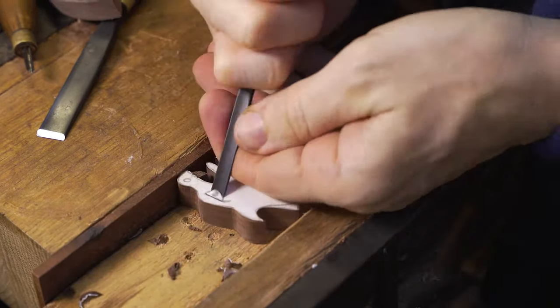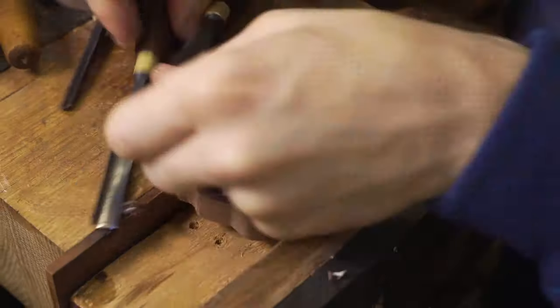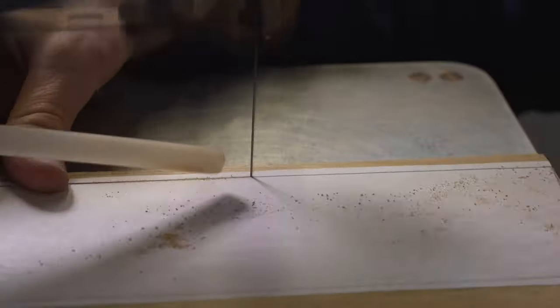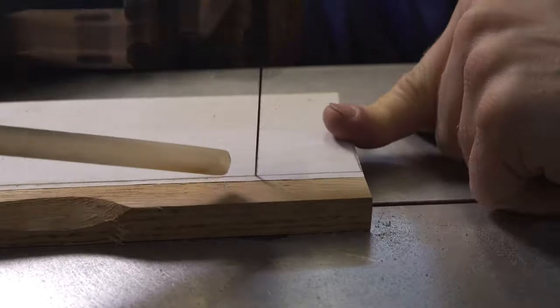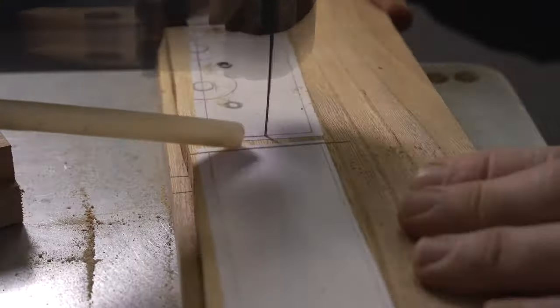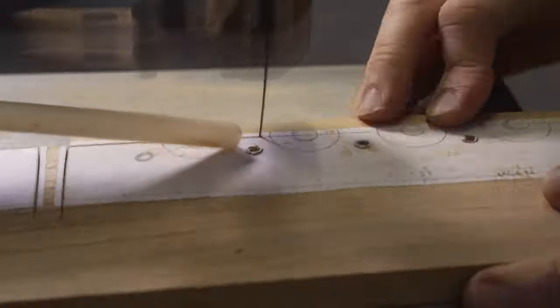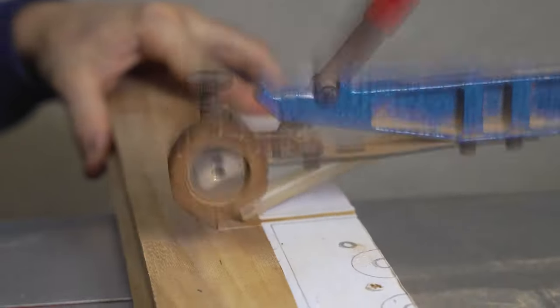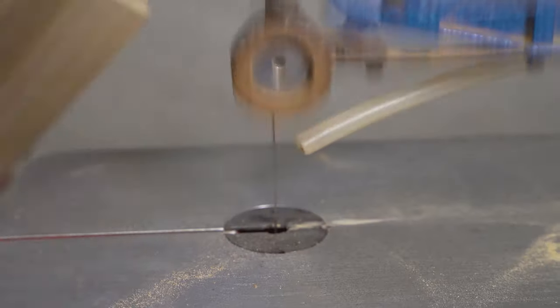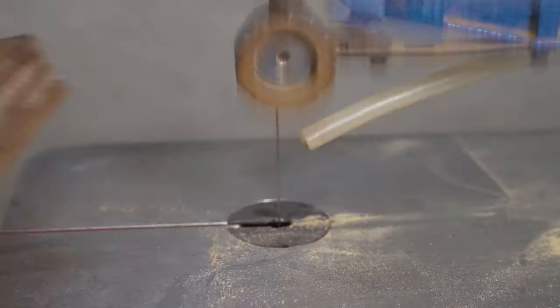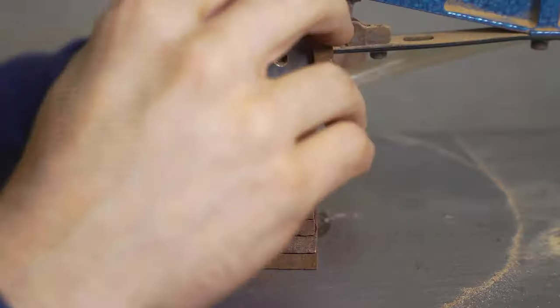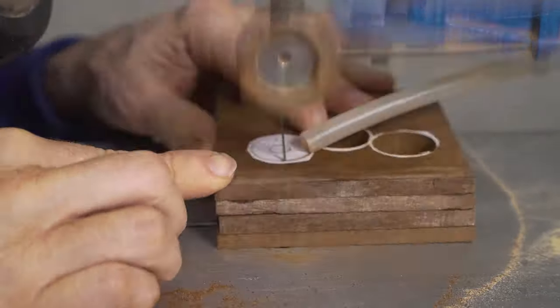So once we have finished carving our figureheads for our Viking longboat, our attention goes on to the main body of the longboat itself. So we're working on the side pieces, and as I mentioned, we have stack cut them to be able to produce two at the same time. We're also stack cutting for the shields that will be added later on to the sides of the longboats.